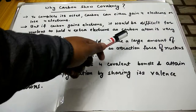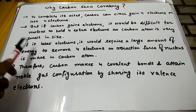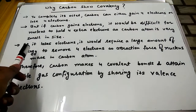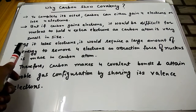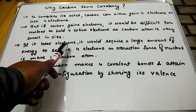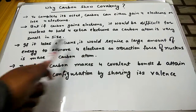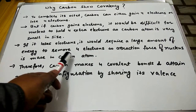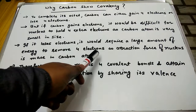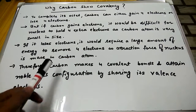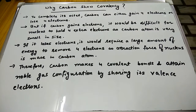The second point is that if carbon loses electrons, it would require a large amount of energy to remove four electrons, as the attraction force of the nucleus is more in the carbon atom.